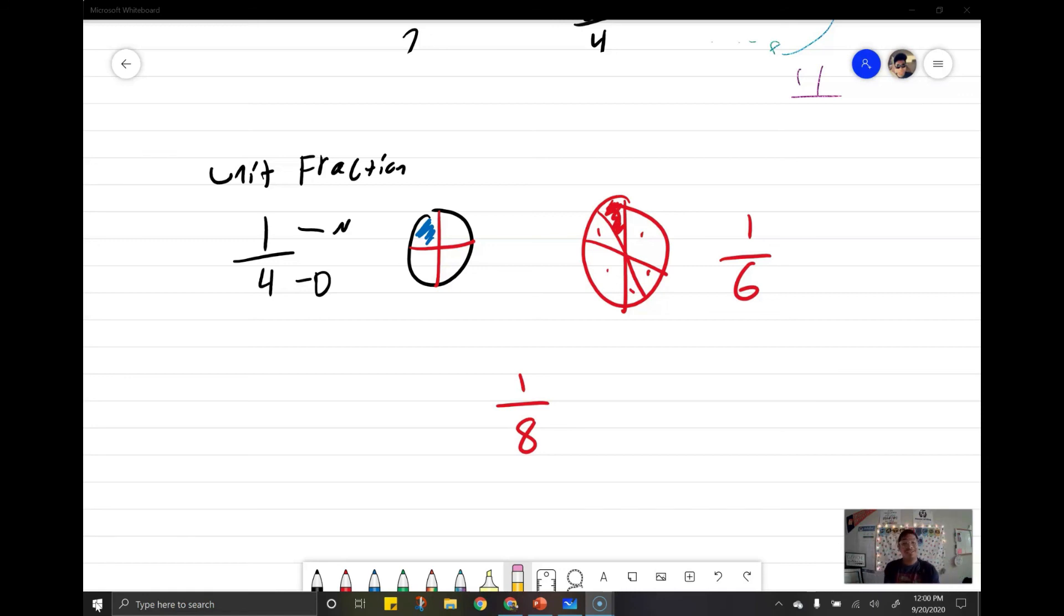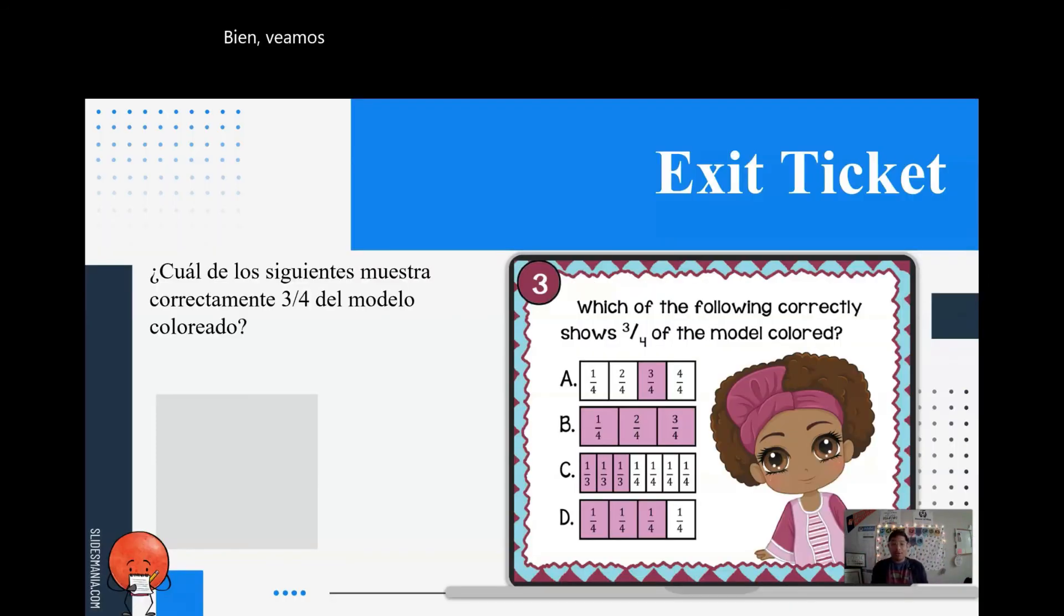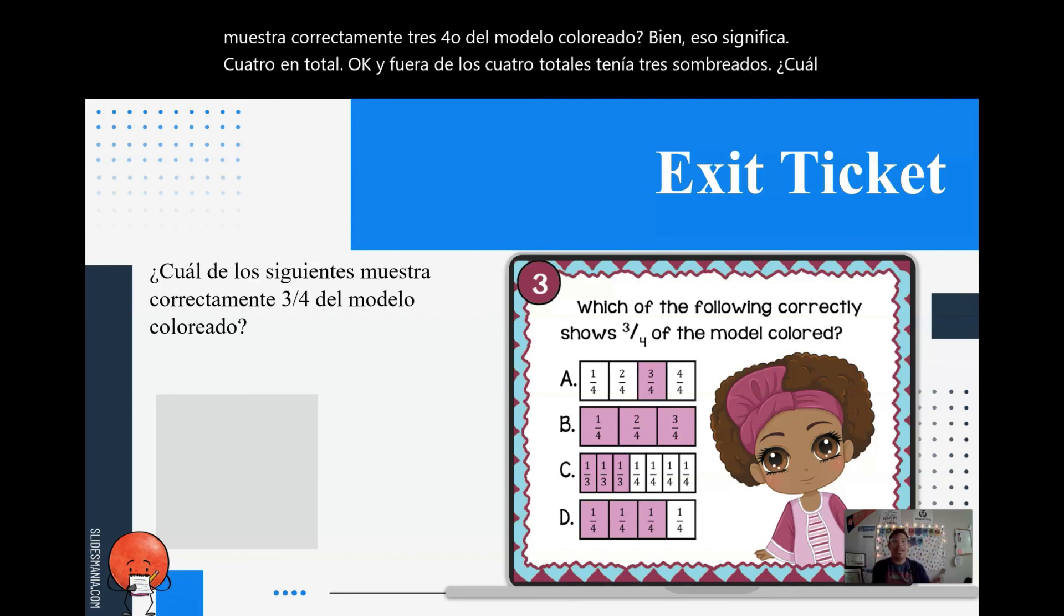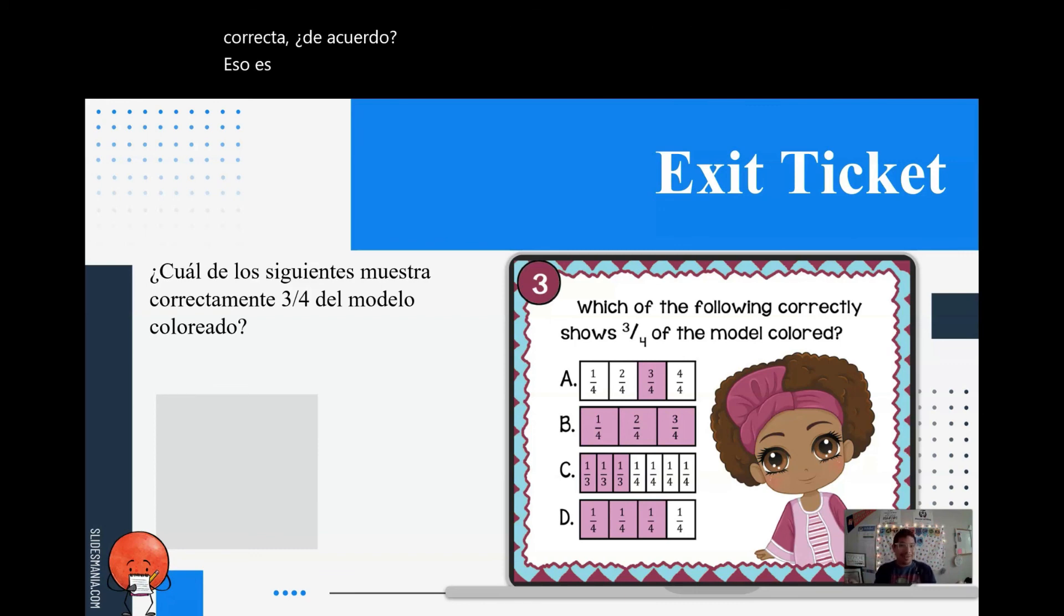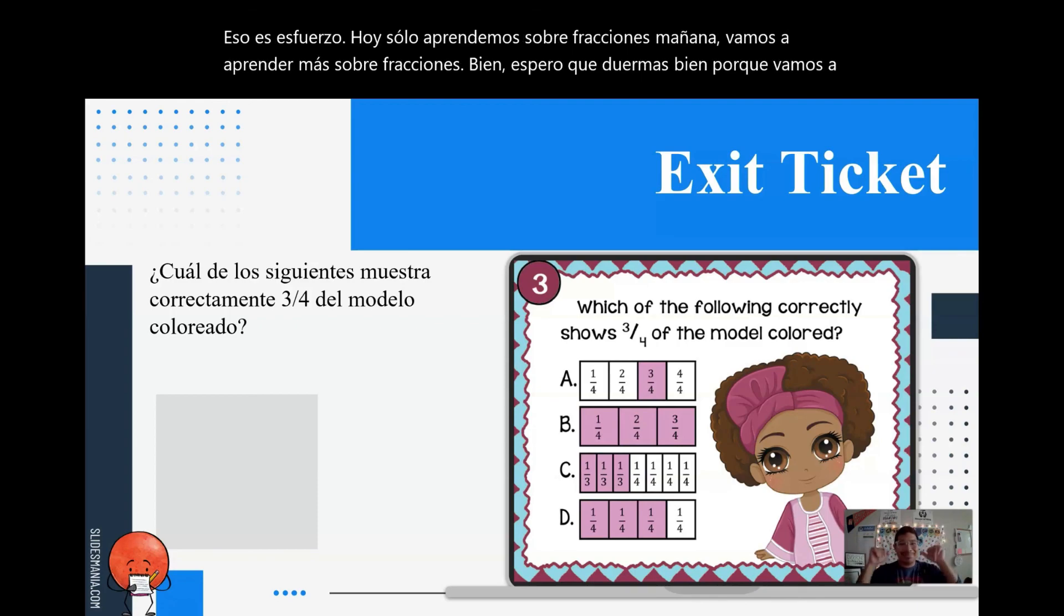So today we just learned about unit fractions, improper fractions, proper fractions, and mixed numbers. Look at you being smart. I know all four fractions. All right, so let's look at our exit ticket. Which of the following correctly shows three fourths of the model colored? So that means I have four in total, and out of the four total, I have three shaded. Which one looks like that? A, B, or C? Make sure you write this down in your journal and you have the correct answer. That is it for today. We just learned about fractions. Tomorrow we're going to learn more about fractions. I hope you have a good night's sleep because we're going to learn a lot tomorrow. I hope you have a great day. Bye.